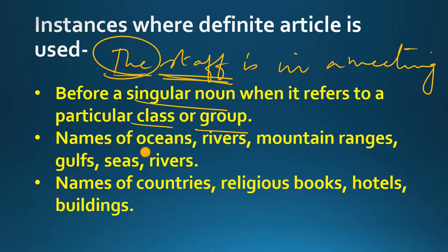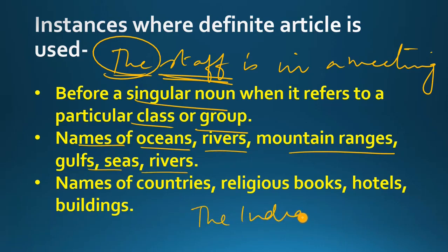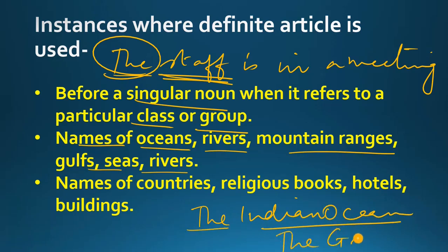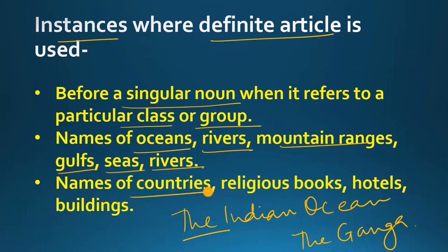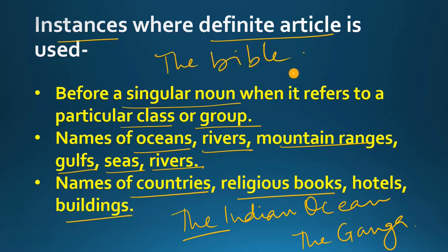Then we use 'the' before names of oceans, rivers, mountain ranges, gulfs and seas. For example, 'the Indian Ocean' — Indian Ocean के नाम से पहले हमने 'the' use किया. Similarly, river का नाम है 'the Ganga'. Another instance is the names of countries, religious books, hotels and buildings. For example, we say 'the Bible', 'the Gita' — जो कि हमारी religious holy books हैं — इनके नाम से पहले भी हमने 'the' use किया है.